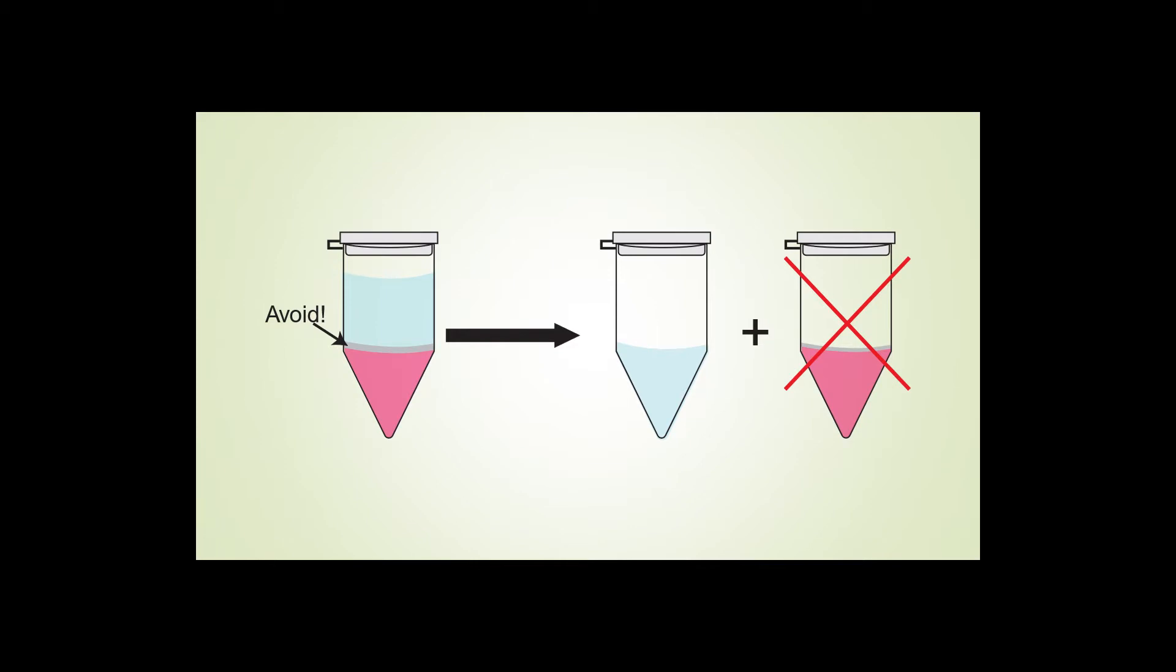After centrifugation, we'll have three layers: a top aqueous layer, a separating layer, and our organic layer at the bottom. We'll want to separate our aqueous layer from the other two.